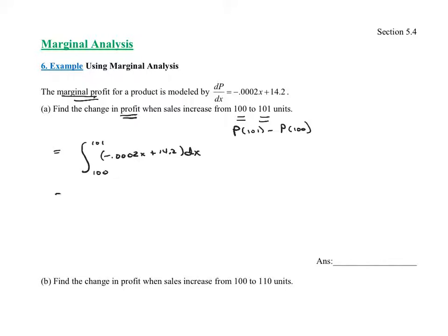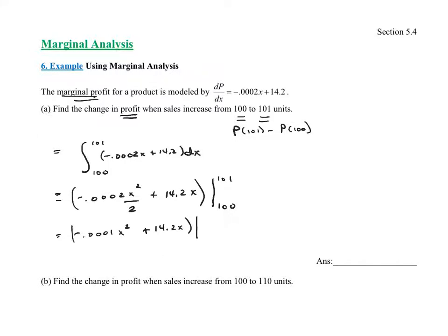Let's go ahead and integrate this. The antiderivative of negative 0.0002x is negative 0.0002 times x squared over 2, plus 14.2x. Simplifying, this becomes negative 0.0001x squared plus 14.2x, evaluated from 100 to 101.